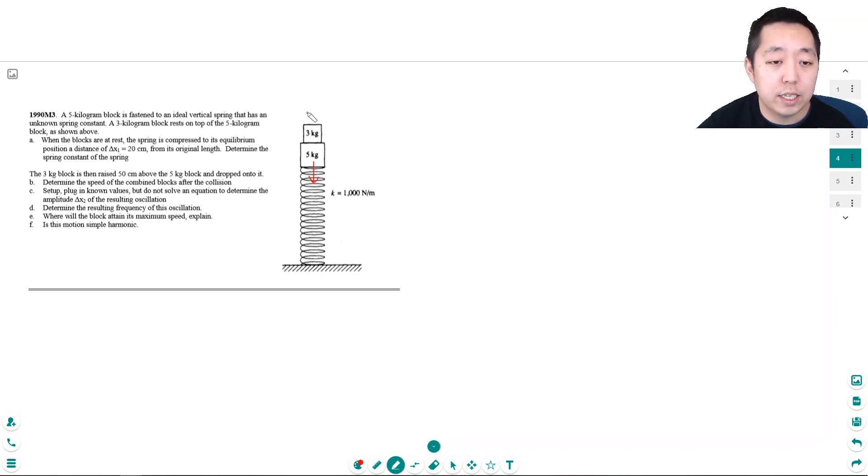The blocks together as one object have mg going down on them and the spring is pushing back on them, the spring force. And because they're in equilibrium, they're the exact same. So mg, which is equal to eight kilograms times 9.8 meters per second squared, is equal to k delta x.